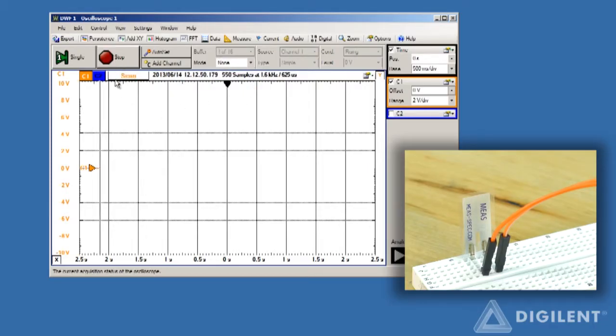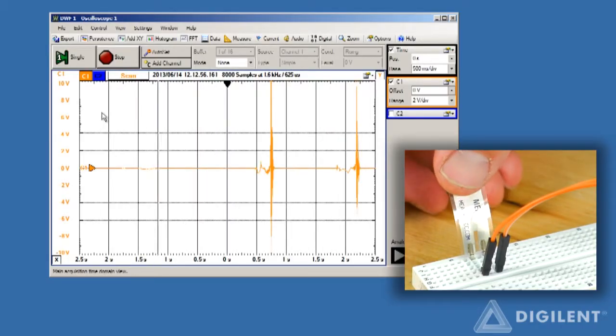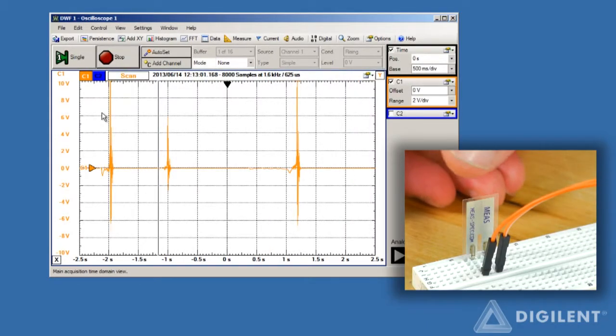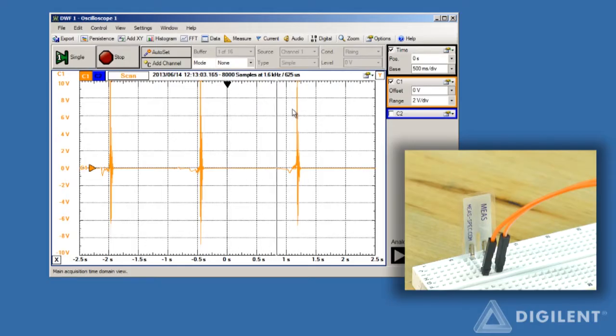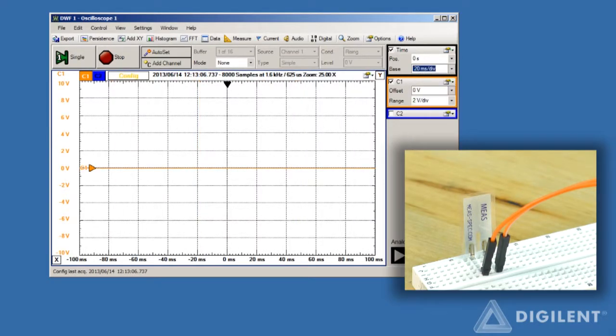Click Run to begin continuous acquisition. Every time we flick the sensor, we see a response on the measured voltage. Unfortunately, at this time scale, we can't tell much about the signal. If we reduce the time base to, say, 20 milliseconds per division, it's now rather haphazard as to whether we see our signal or not.